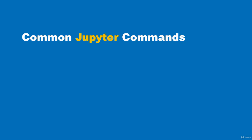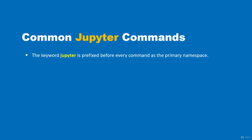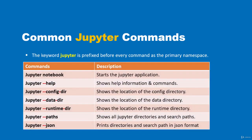In this video I'm going to show you some common and useful Jupyter commands. All Jupyter commands are prefixed with the keyword 'jupyter' before the subcommands are issued — 'jupyter' is the primary namespace for all subcommands. Let's look at a table showing some common Jupyter commands. The first command is to start Jupyter Notebook: type 'jupyter notebook' and that will start the application.